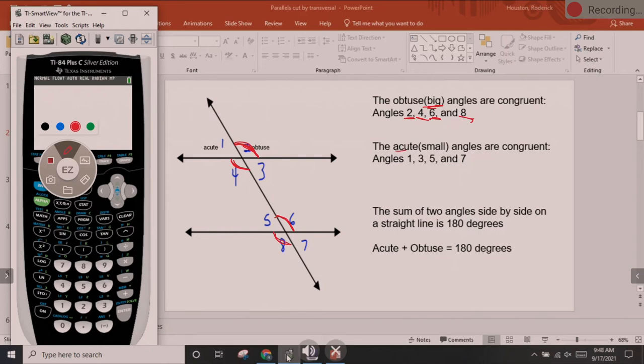And we also have acute angles. They open less than 90. On a straight line the acute angle is always next to the obtuse angle and it's smaller. It's smaller than that obtuse angle. Angle 1, 3, 5, and 7.